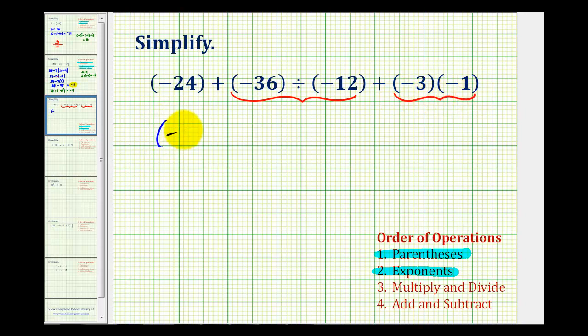So we'll have (-24) + (-36) ÷ (+12). Well, a negative divided by a negative is positive, so this quotient will be positive 3, plus (-3) × (-1). Well, a negative times a negative is also positive, so this is also positive 3.